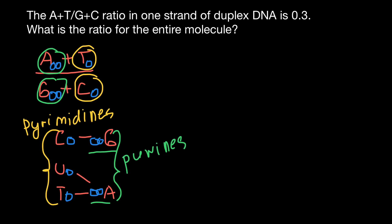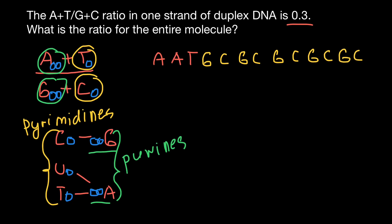Now let's use a logical method to solve this problem. Our ratio is 0.3. Let's say a random sequence has adenine, adenine, thymine — those are what we have in the numerator. In order to get a ratio of 3, if we have 3 bases in the numerator, we need the remaining bases on one strand of the DNA to be guanine and cytosine pairs making up 10 bases total.